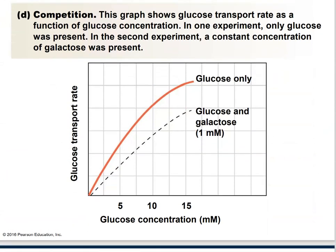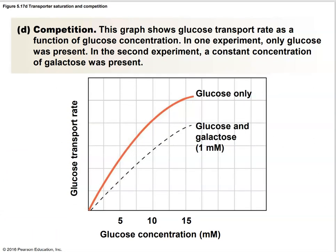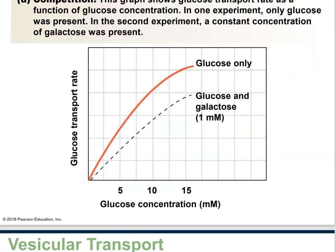And competition: sometimes we have competition for binding sites. If you add additional substances, you might slow down the rate of glucose transport. If you have glucose and galactose together, you're slowing down the rate; if it's glucose only, there's no competition.